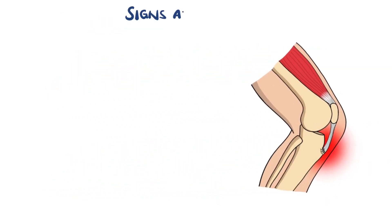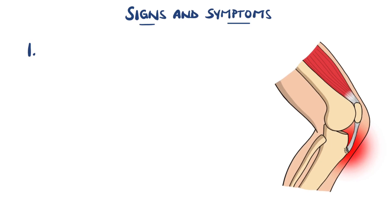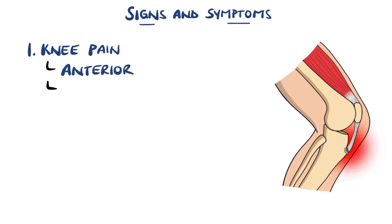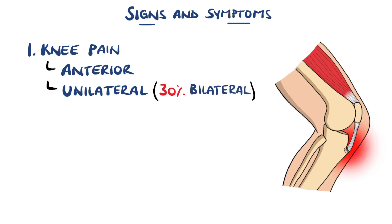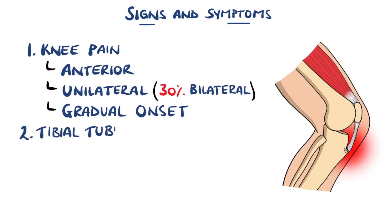Knee pain is the most common symptom, which is on the anterior portion of the knee, just below the patella. In most cases it is unilateral, but both sides are affected in around 30% of cases. In general it has an insidious gradual onset with no trauma, and may initially be episodic but go on to become continuous. The tibial tubercle itself can be tender to touch and may have some associated enlargement, which can be felt as a prominent lump.